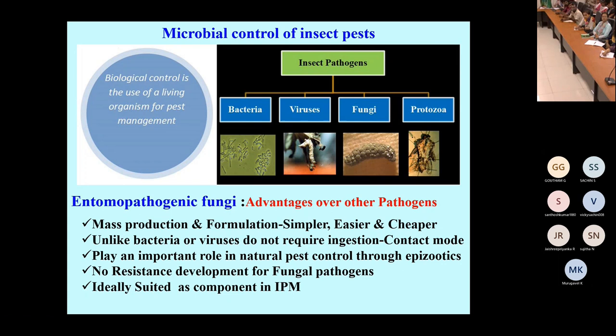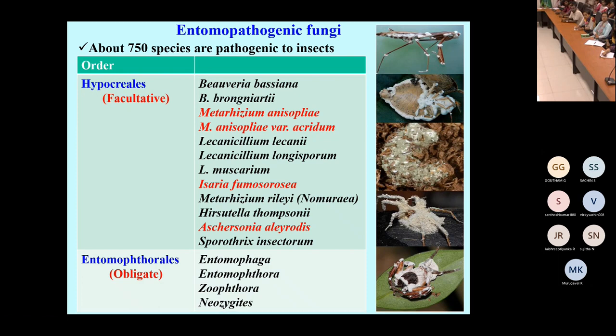There are several entomopathogenic fungi reported in India. The Entomophthorales mostly work in other countries, not in India, as they are obligate pathogens and culture growth is very difficult — genera like Entomophaga, Entomophthora, Zoophthora, and Neozygites. Foreign scientists have reported work on these.